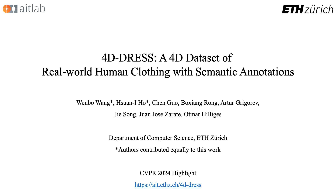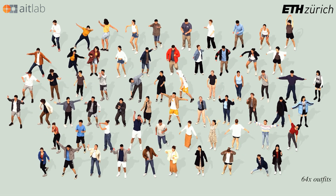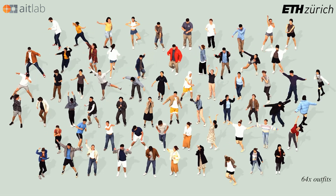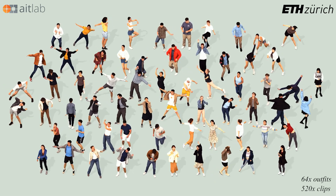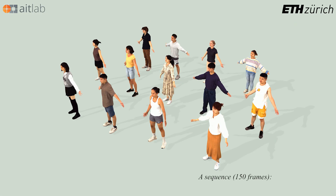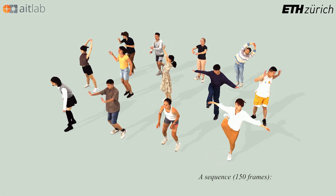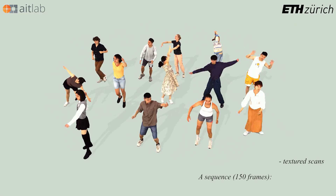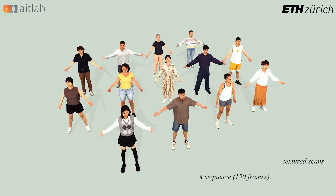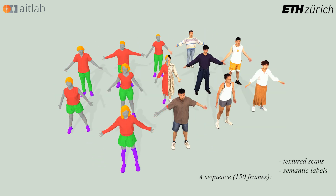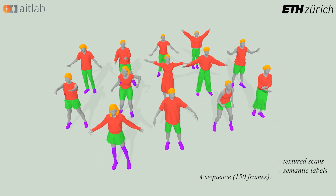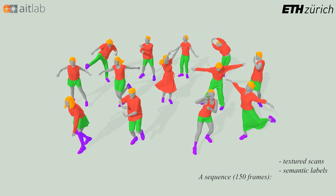We present 4D Dress, the first 4D dataset providing real-world human clothing with semantic annotations. The dataset contains 64 different outfits and 520 dynamic motion clips. Each sequence consists of 150 textured scans of a clothed human, together with the semantic annotations at the vertex level of the scan meshes.